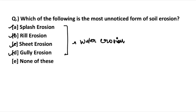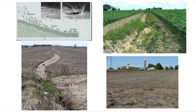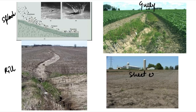It's important to know what are the categories of wind erosion and what are the categories of water erosion. Before going to the answer, let's discuss each of these erosion types one by one. The first figure shows splash erosion, then rill erosion, gully erosion, and sheet erosion.